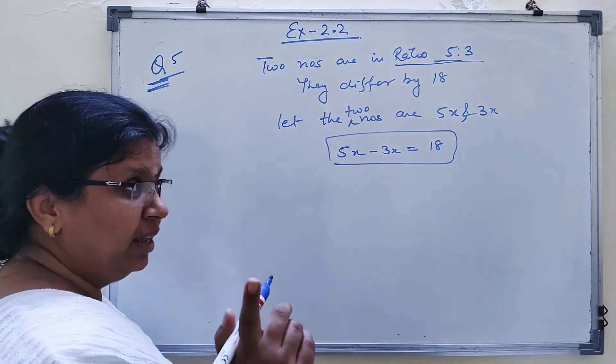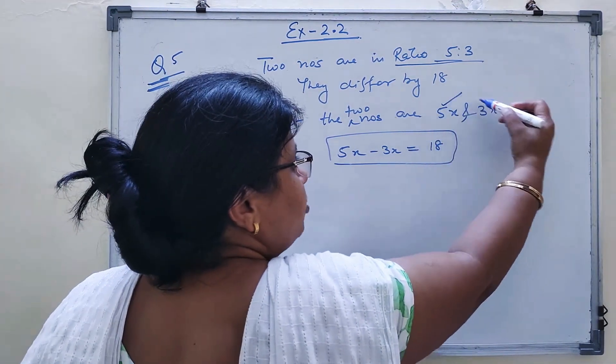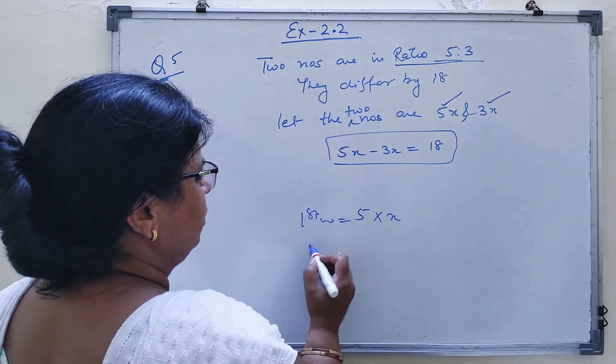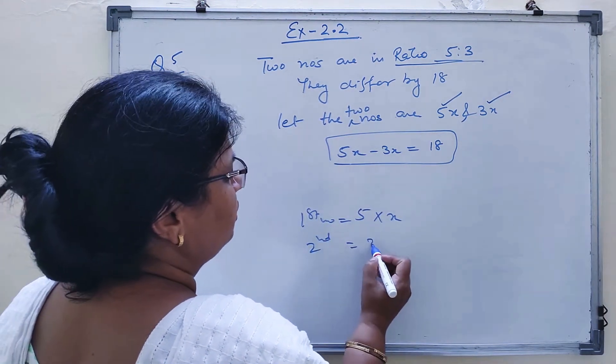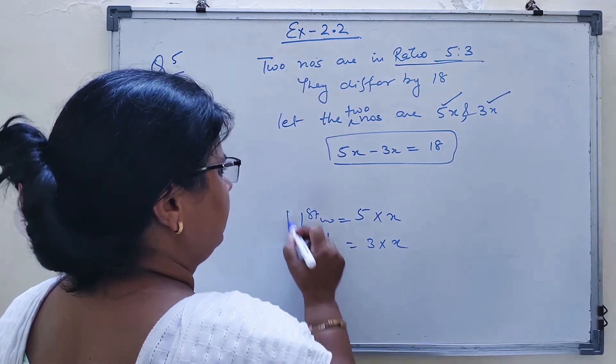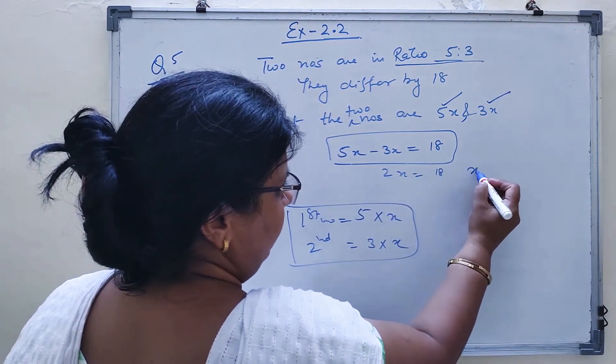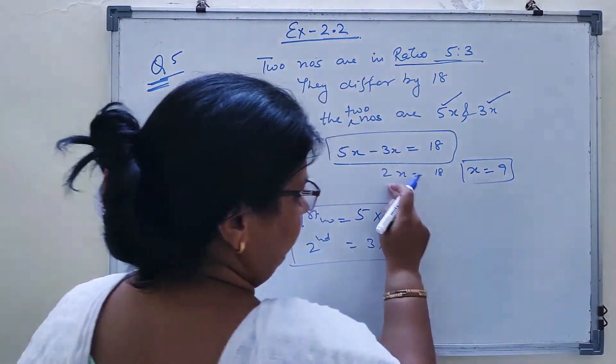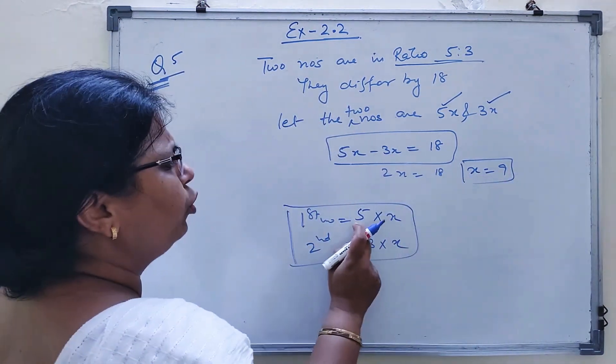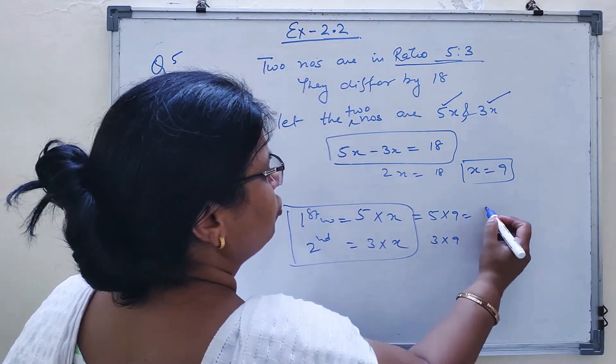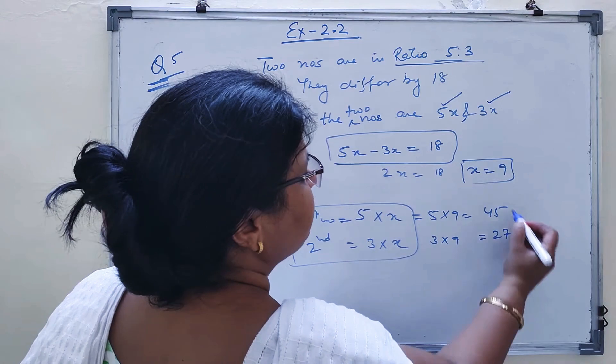X is not the final answer. You have to substitute it here: 5 into x will be the first number, and 3 into x will be the second number. So 2x equal to 18, x equal to 9. You have to substitute 9 here. So one answer is 45, the other one is 27.